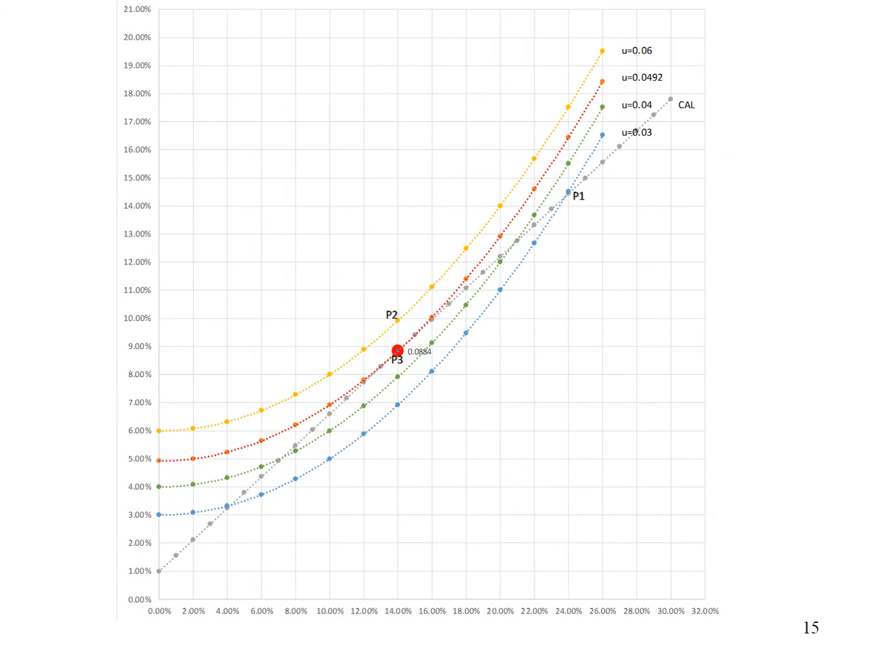P3 is the investor's optimal portfolio. It is on the capital allocation line, so it is feasible. It is tangent to the indifference curve. A given increase in risk is compensated by an increase in expected return that is proportional to what the investor requests. At P3, the investor's preferences for risk and expected return are reconciled with the opportunities offered on the capital allocation line.